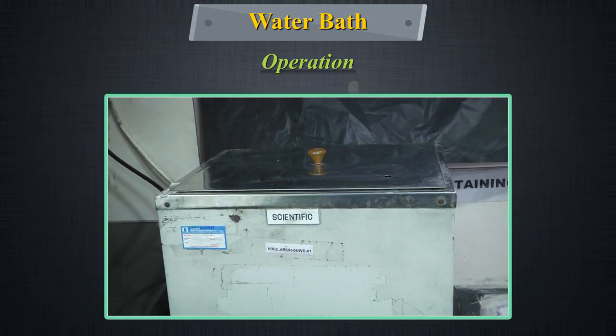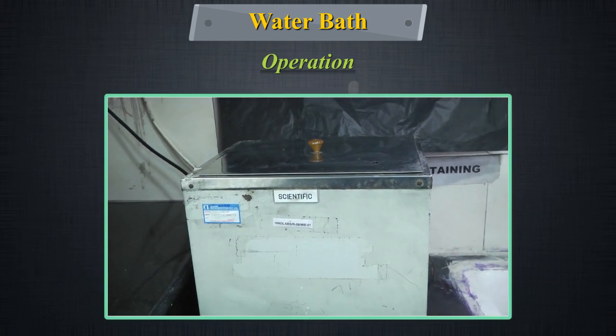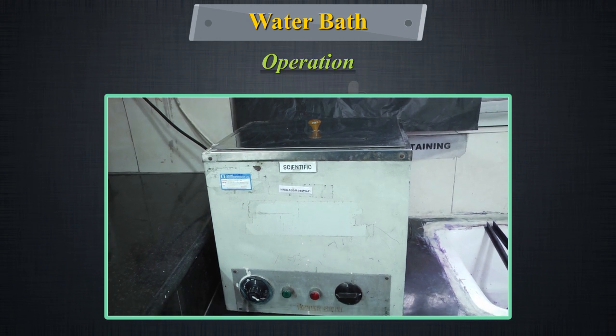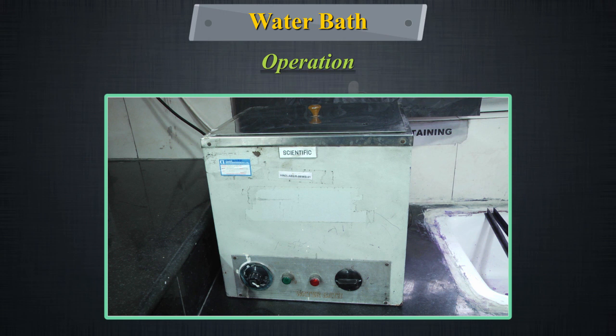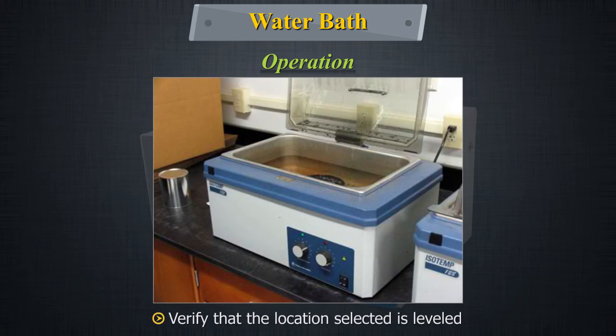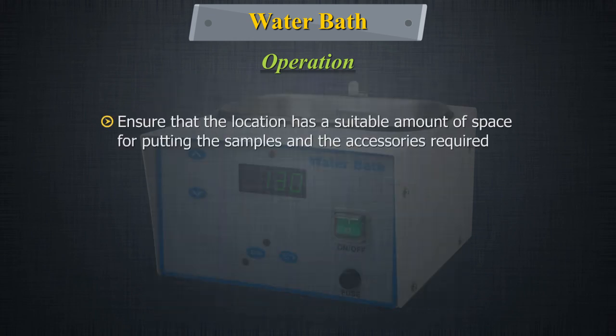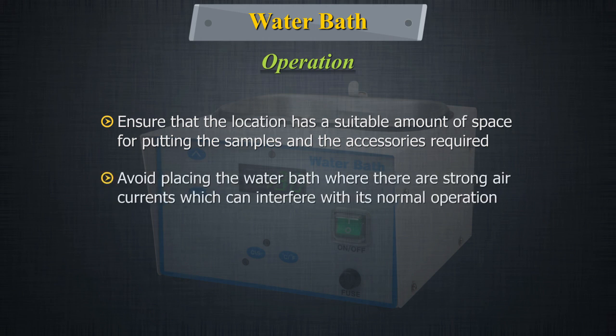For operation, install the water bath close to an electrical outlet. Its installation and use is facilitated by having a sink close by for supplying and draining of water. Verify that the location selected is level. Ensure that the location has a suitable amount of space for putting the samples and the accessories required. Avoid placing the water bath where there are strong air currents which can interfere with its normal operation.